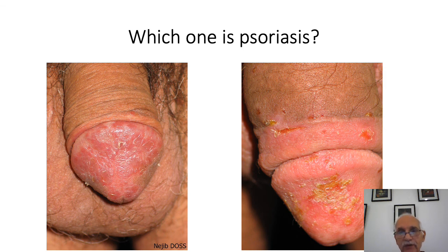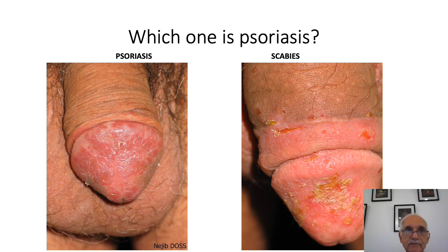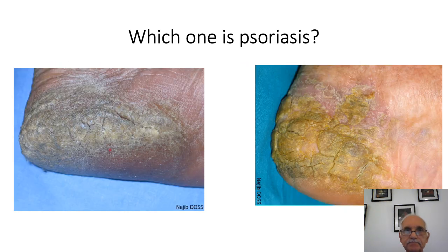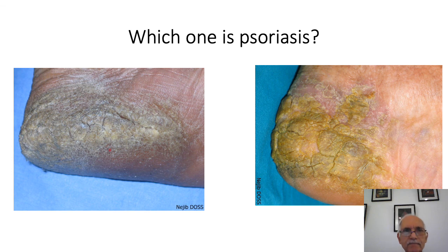These lesions on the genital area are often misdiagnosed as sexually transmitted infections, but in fact it was psoriasis and scabies. Here we have two keratodermas in two different patients — it was frictional keratoderma and psoriasis.